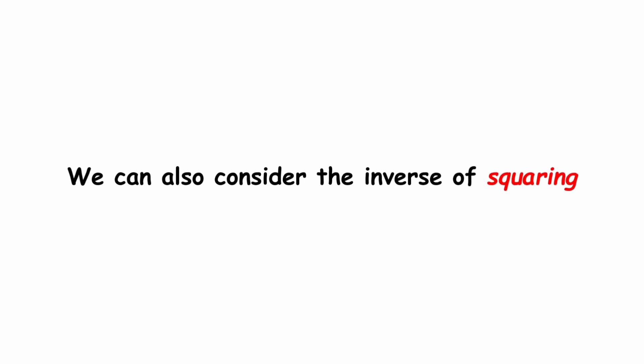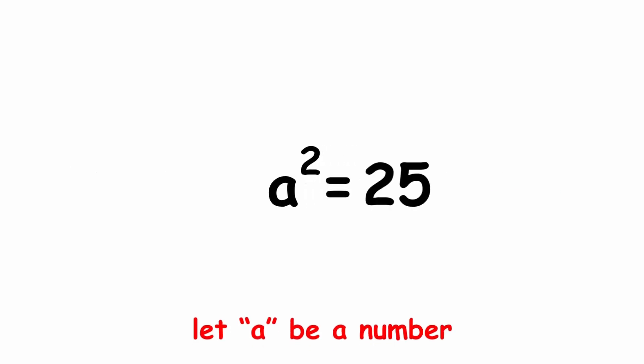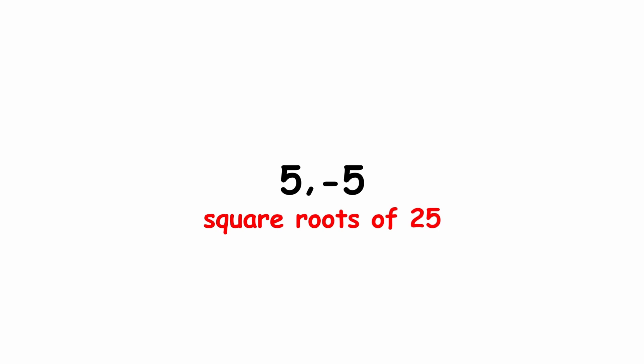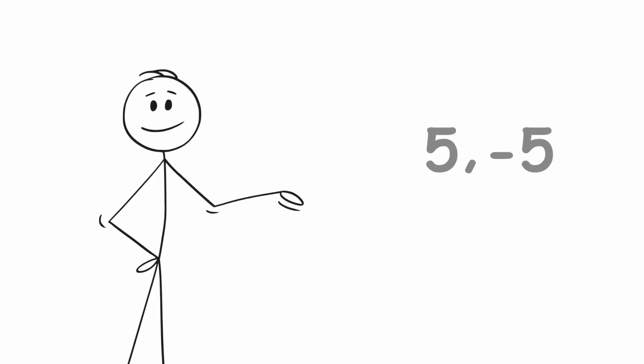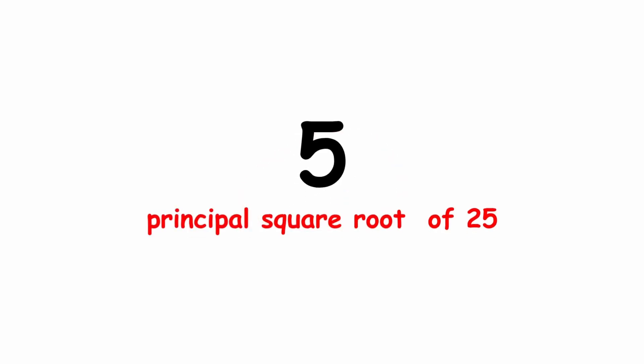We can also consider the inverse of squaring. For example, what number squared is 25? There are actually two possible answers, those being 5 and negative 5, and these are called the square roots of 25. However, we're often just interested in the non-negative solution, which is 5. 5 is called the principal square root of 25, or simply the square root.